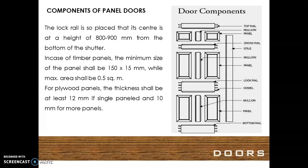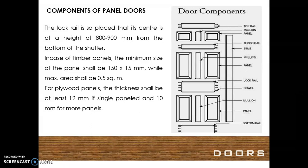The lock rail is placed so that its center is at a height of 800 to 900 mm from the bottom of the shutter. In case of timber panels, the minimum size of the panel shall be 150 mm by 15 mm, while the maximum area shall be 0.5 square meters. For plywood panels, the thickness shall be at least 12 mm if single panel, and 10 mm for more panels.